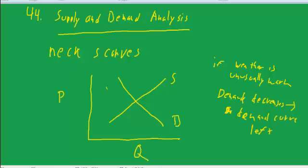We draw a new one typically with a dashed line. We'll call that D1 or D prime. Then we move along the supply curve, so the equilibrium goes from here down to here. This is our new equilibrium, P prime and Q prime.